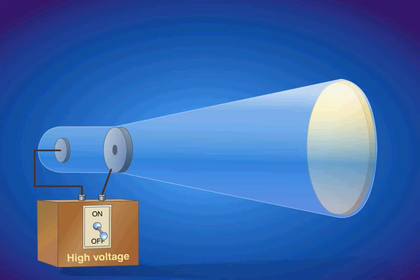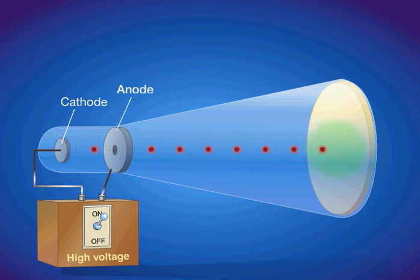When the two metal plates are connected to a high voltage source, the negatively charged plate, called the cathode, emits an invisible ray. The cathode ray is drawn to the positively charged plate, called the anode, where it passes through a hole and continues traveling to the other end of the tube.